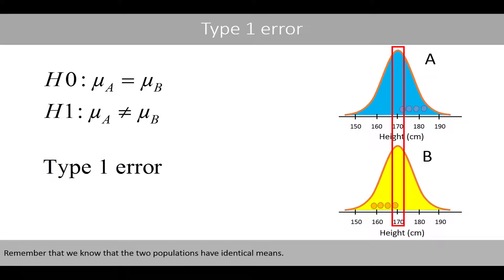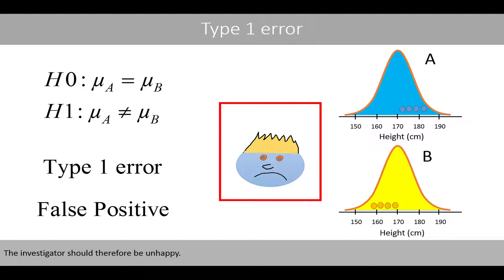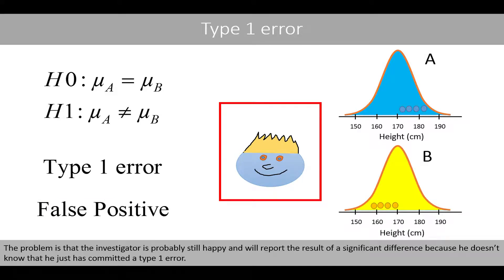Remember that we know that the two populations have identical means. This result is therefore called a false positive result because the detected significant difference between the two populations is false. The investigator should be unhappy, but the problem is that he is probably still happy and will report the result of a significant difference because he doesn't know that he has just committed a type 1 error.